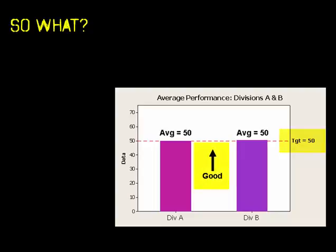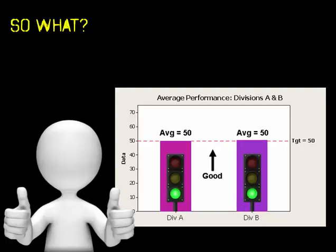The goal is 50 and higher is better. Both come in at target and we have dozens of other measures to look at, so we give these guys both a green light and we move on. After all, fires are burning elsewhere that need our attention, right?